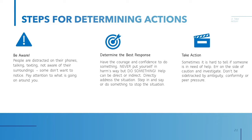The first step is to be aware at all times when you're out with the public or dealing directly with customers. A lot of times people are distracted — on their phones, talking and texting, returning emails — and may not be fully aware of their surroundings. Pay attention to what is going on around you. The second step is to determine the best response. Have the courage and confidence to do something, but never put yourself in harm's way. Help can be direct or indirect — directly address the situation, or step in and say or do something to help resolve the conflict. Err on the side of caution and investigate to determine the best response. Don't be sidetracked by ambiguity, conformity, or peer pressure.